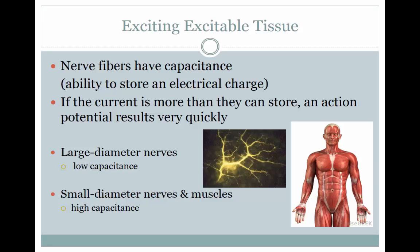In order to have an effect, we must be able to excite excitable tissues with the use of electrical energy. Nerve fibers have a capacitance, which is the ability to store an electrical charge. If the current is more than the nerves can store, an action potential results very quickly. Large diameter nerves have a low capacitance, or ability to store an electrical charge. Examples of large diameter nerves are the A-alpha and A-beta nerves, which respond to touch and pressure, as well as the muscle spindle and Golgi tendon organ within the muscle.